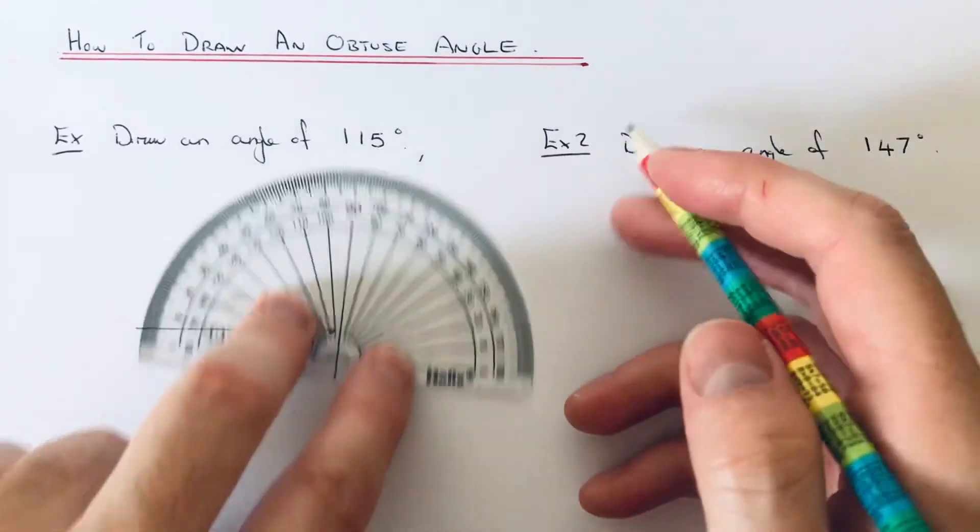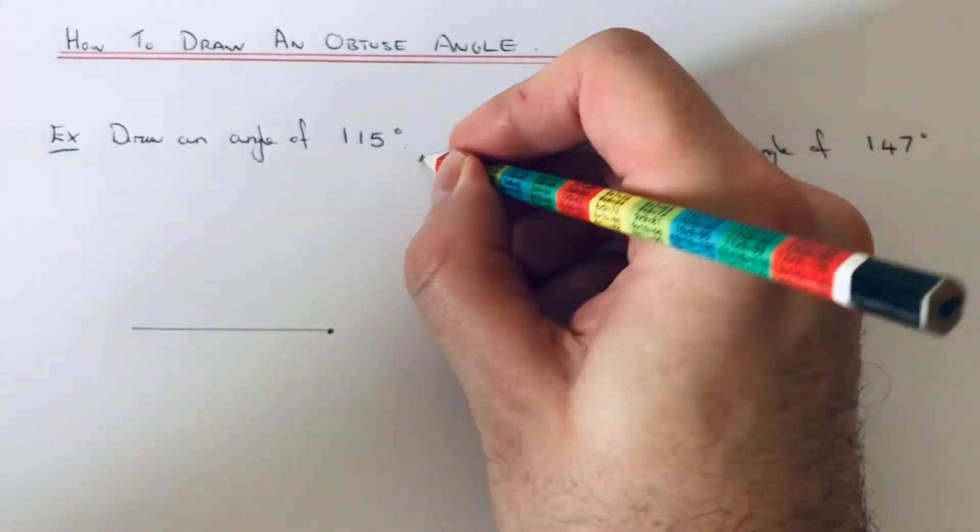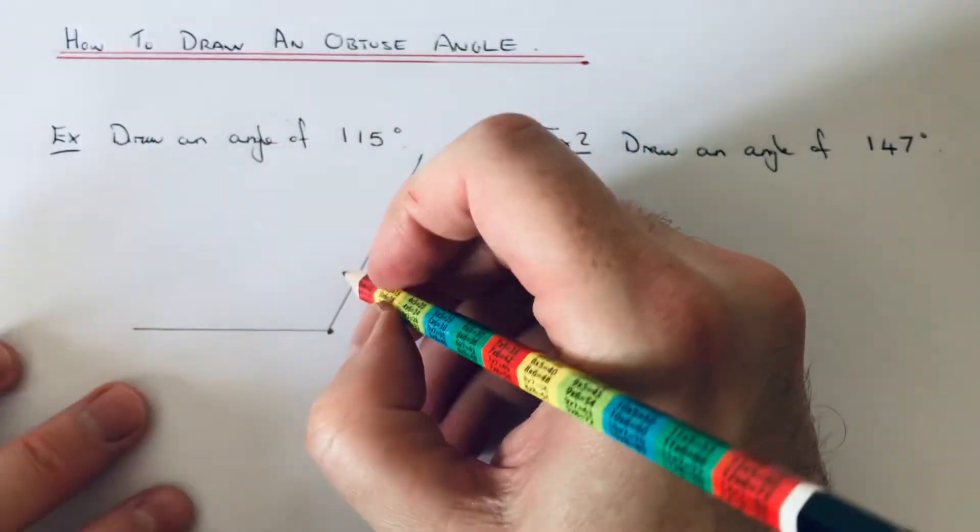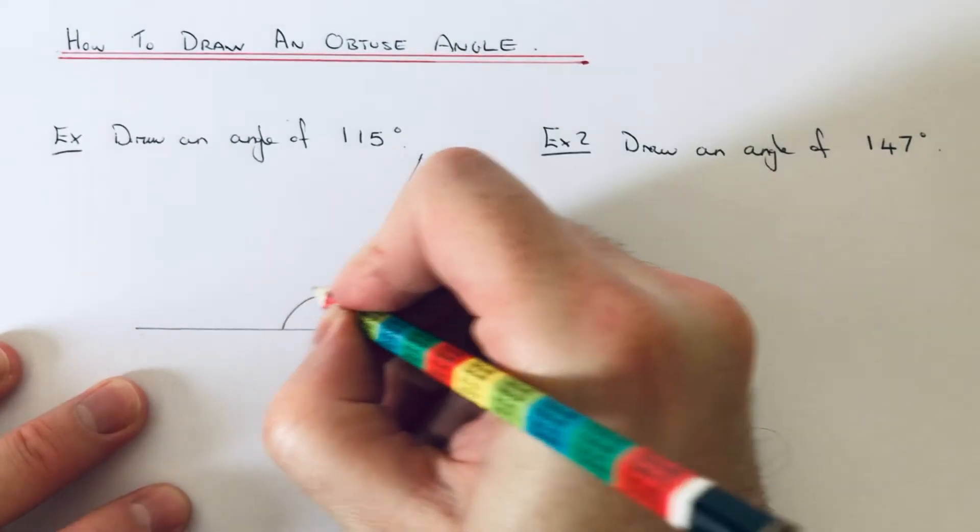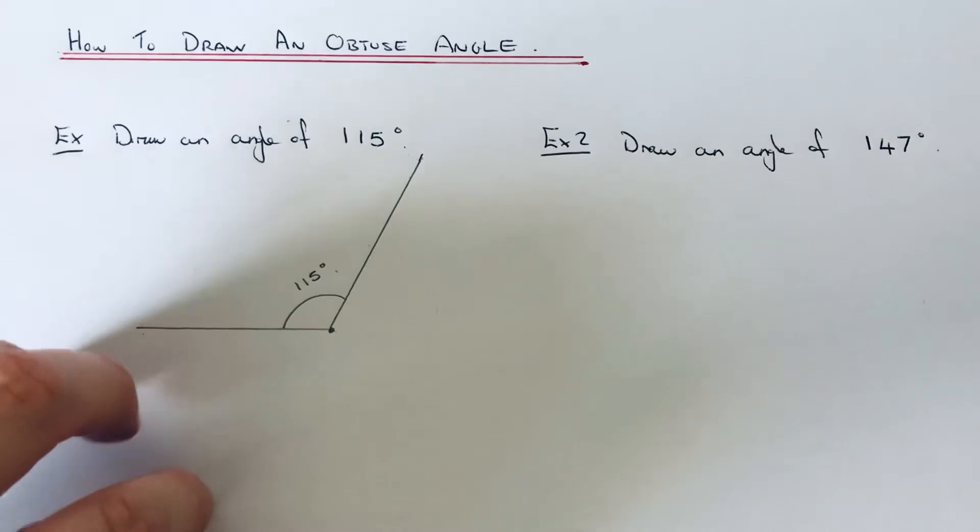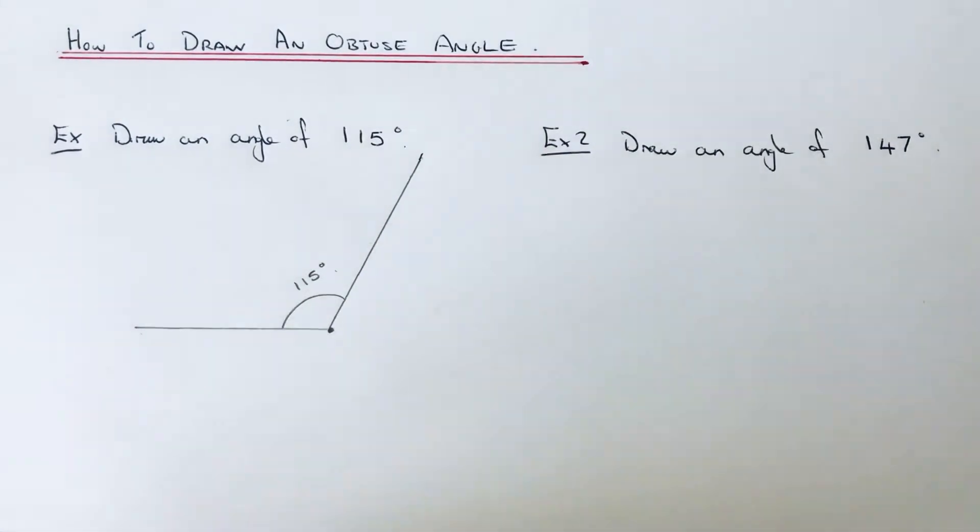Okay, so we then join it back up to the end of the line and we mark that angle in as 115 degrees. And there you go, that's our first one done.